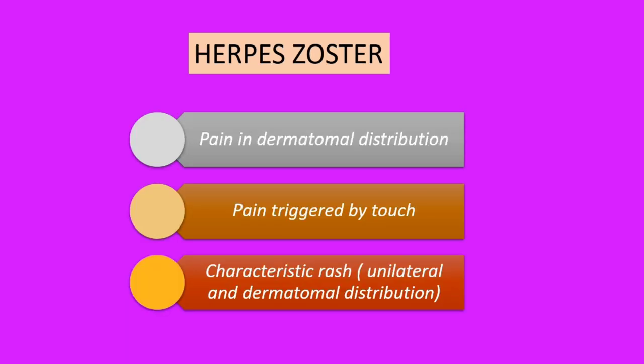In costochondritis, there is tenderness of the costochondral joints. Herpes zoster can also present with chest pain: pain in a dermatomal distribution, pain triggered by touch, and a characteristic rash with unilateral dermatomal distribution. This concludes the physical examination in patients with chest pain. Thank you for your attention.